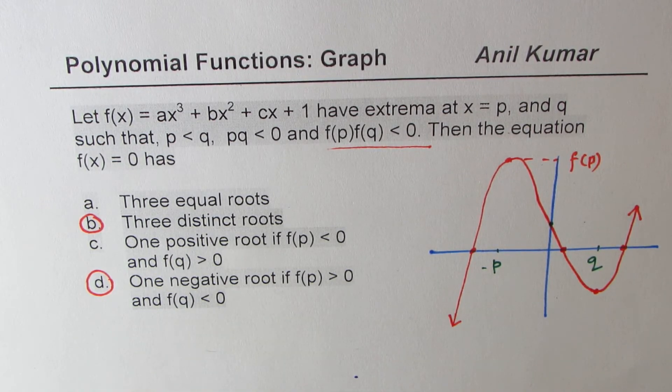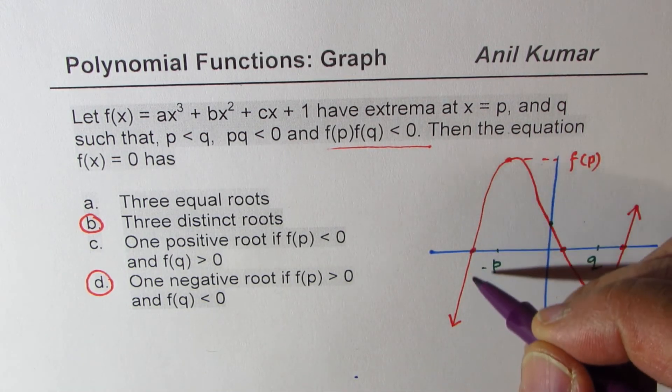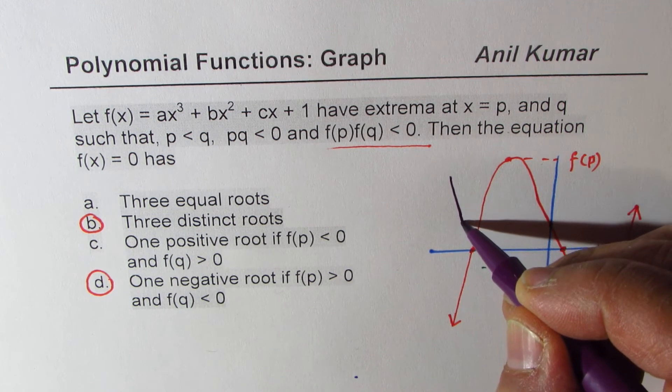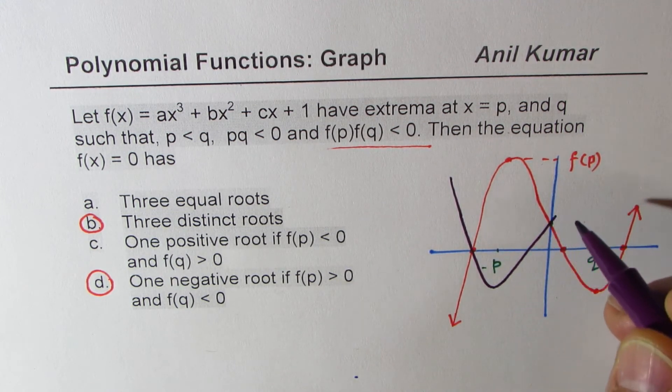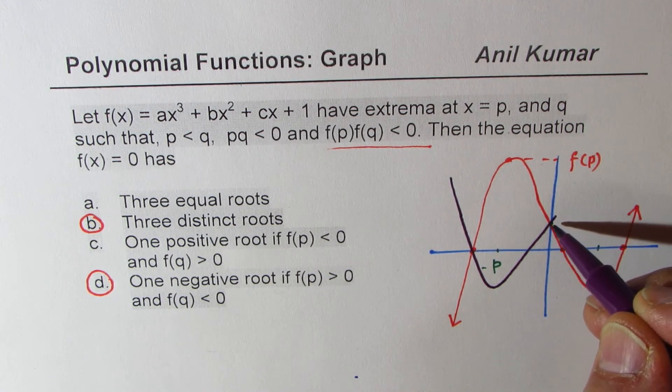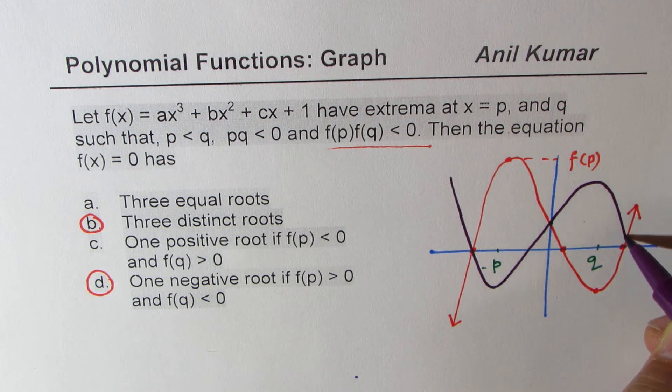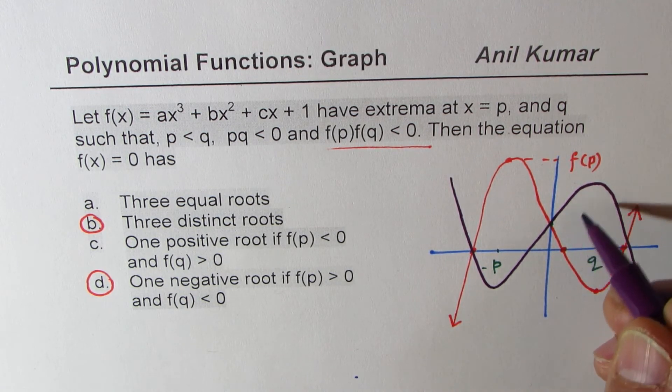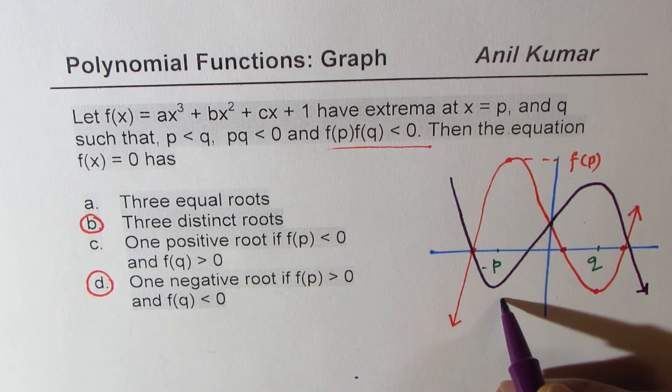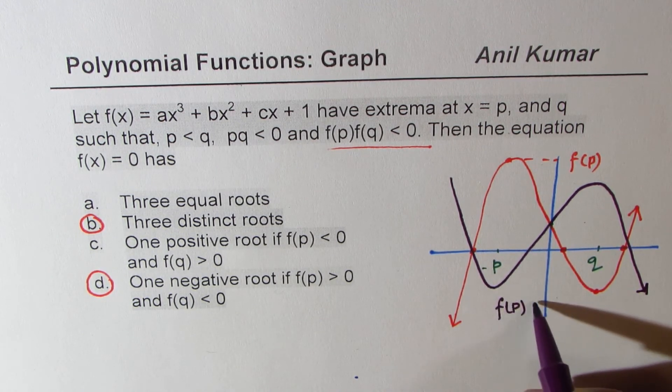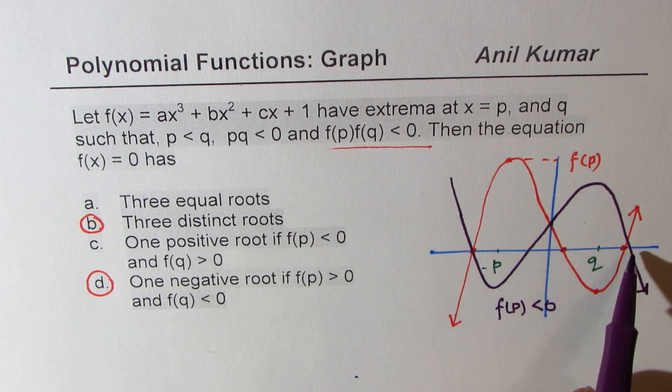Now it could be the other way also. So it could be kind of going downwards. And the graph will be, if you go down like this, you have to turn, go through the 1. That is the y-intercept. And then you have to turn at q and come down some way. Now that is the second scenario. And in this scenario, we have f(p) is less than 0. Now if that is the case, we get 2 negative and 1 positive root.